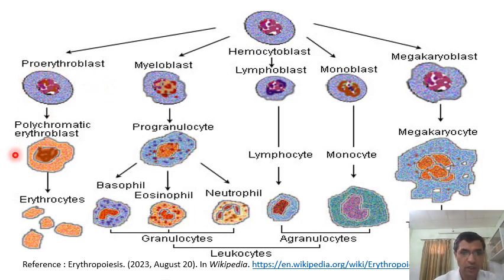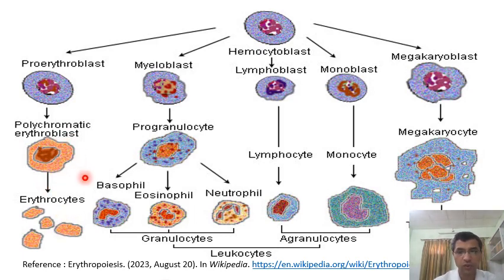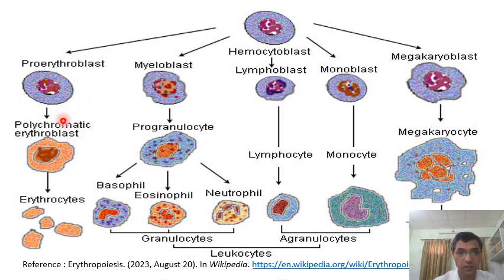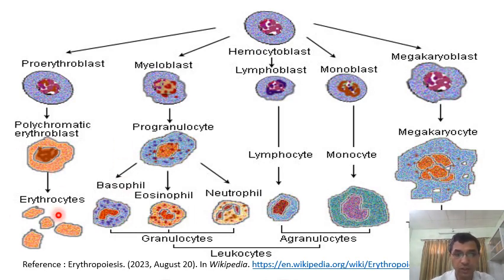The proerythroblast undergoes certain mitotic divisions and becomes the polychromatic erythroblast. Then erythrocytes will form. The proerythroblast changes into proerythrocytes, then into normoblast. In the normoblast stage, the nucleus is disintegrated in mammalian RBC, and the RBC becomes enucleated. After that, these proerythrocytes differentiate into the mature erythrocytes — the red blood corpuscles.